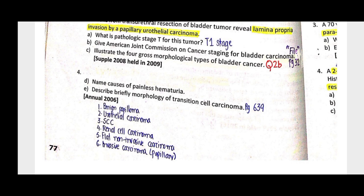Papillary urothelial neoplasm of low malignant potential shows proliferation. High-grade urothelial carcinoma shows loss of polarity, nuclear atypia, pleomorphism, nuclear hyperchromatism, and involvement of muscularis propria and lamina propria.